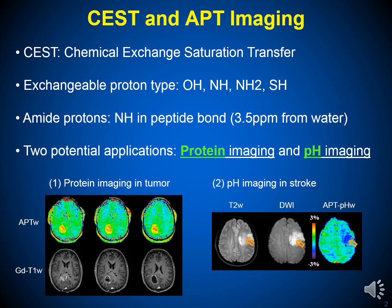Chemical exchange saturation transfer (CEST) imaging is an important molecular MRI technique that can generate contrast based on the proton exchange between the free bulk water proton and the solute label protons. Mobile biomolecules with water-exchangeable protons can be detected indirectly through the bulk water signals. Amide proton transfer (APT) imaging is sensitive to the interactions between the free bulk water proton and the amide proton in the peptide bond of mobile proteins in tissues.